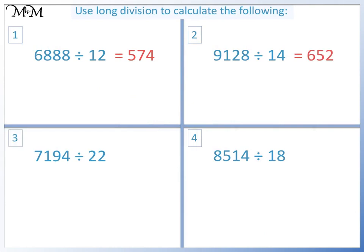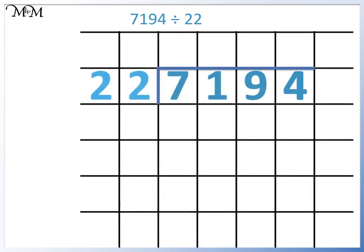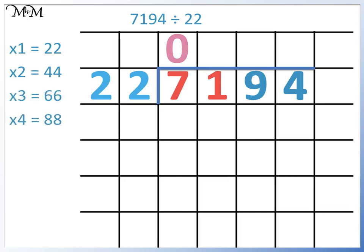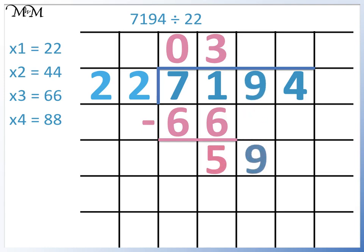Question 3: 7,194 divided by 22. 22 doesn't divide into 7, so we will find 71 divided by 22. We'll list some of the numbers in the 22 times table: 22 times 1 is 22, times 2 is 44, times 3 is 66, times 4 is 88. 66 is the closest to 71 without going past it. 71 divided by 22 is 3. We subtract 66 from 71 to find the remainder — the remainder is 5. We bring down the 9. We can see that 44 is the closest to 59 without going over, so 59 divided by 22 is 2.